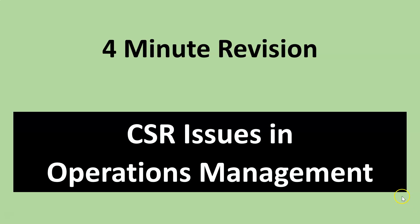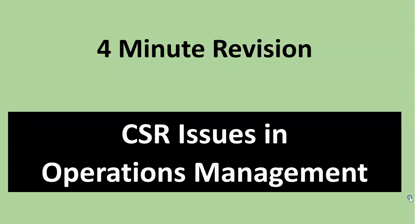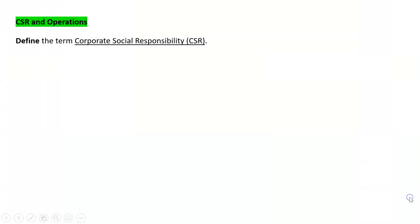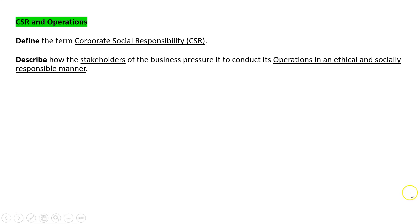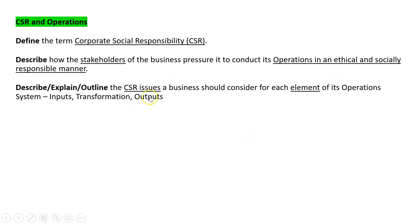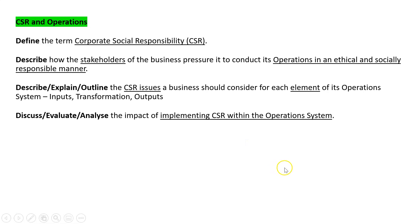The last part of operations management is we need to consider some corporate social responsibility issues. Some possible exam questions could be: define the term corporate social responsibility; describe how the stakeholders of the business pressure it to conduct its operations in an ethical and socially responsible manner; describe, explain, or outline the CSR issues a business should consider for each element of its operation system within inputs, transformation, and outputs; and discuss, evaluate, or analyze the impact of implementing CSR within the operation system.